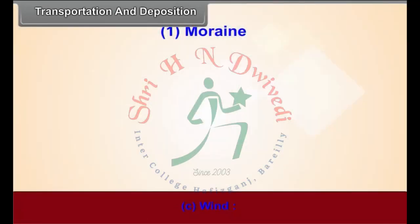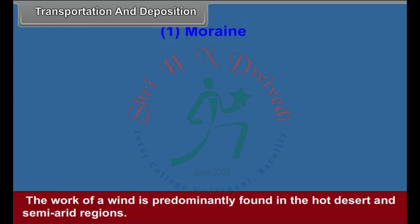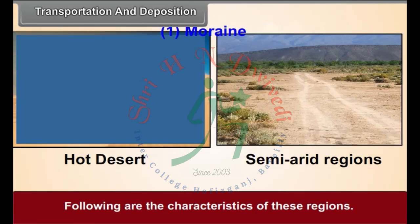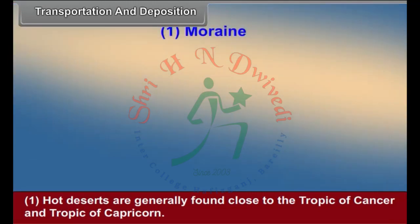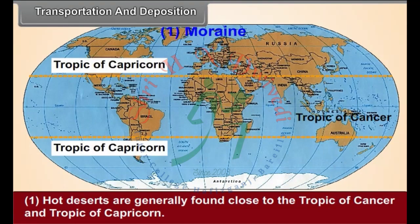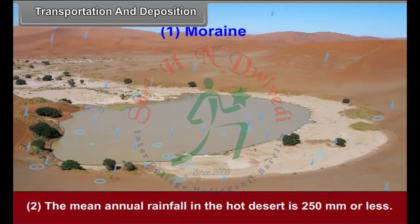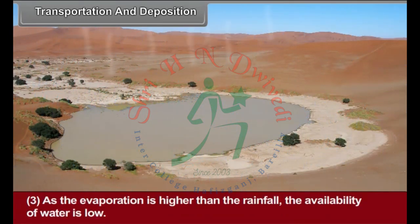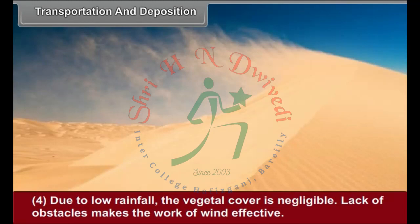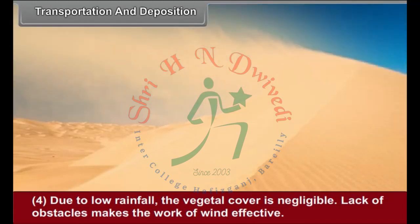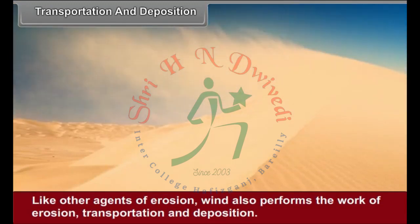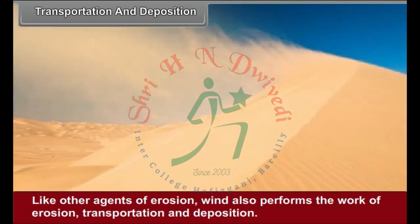The Wind: The work of wind is predominantly found in hot desert and semi-arid regions. Hot deserts are generally found close to the Tropic of Cancer and Tropic of Capricorn. The mean annual rainfall in hot deserts is 250 mm or less. As evaporation is higher than rainfall, the availability of water is low. Due to low rainfall, the vegetal cover is negligible, and the lack of obstacles makes the work of wind effective. Like other agents of erosion, wind also performs the work of erosion, transportation and deposition.